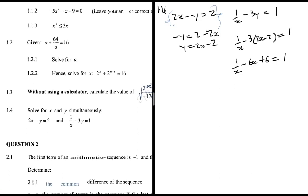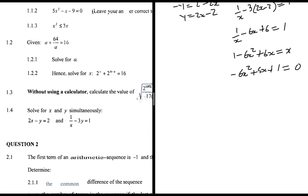Multiplying through by x to eliminate fractions: 1 - 6x² + 6x = x, so -6x² + 5x + 1 = 0. Multiplying by -1 to make the leading coefficient positive: 6x² - 5x - 1 = 0.